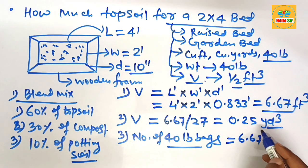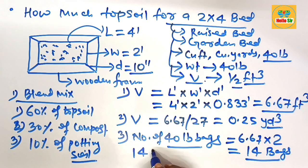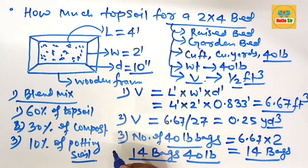6.67 multiplied by 2 will come to about 14 bags of topsoil. It means you have to buy approximately 14 bags of 40 pound topsoil for creating a 2 by 4 garden bed.